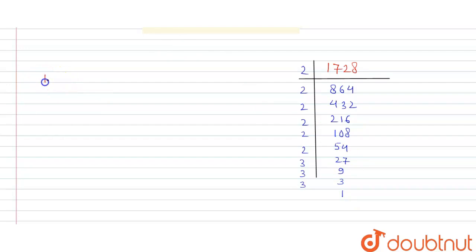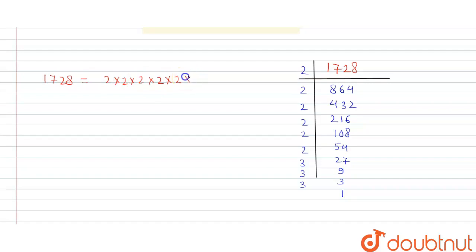So the factors of this number give us: 1728 = 2 × 2 × 2 × 2 × 2 × 2 × 3 × 3 × 3.